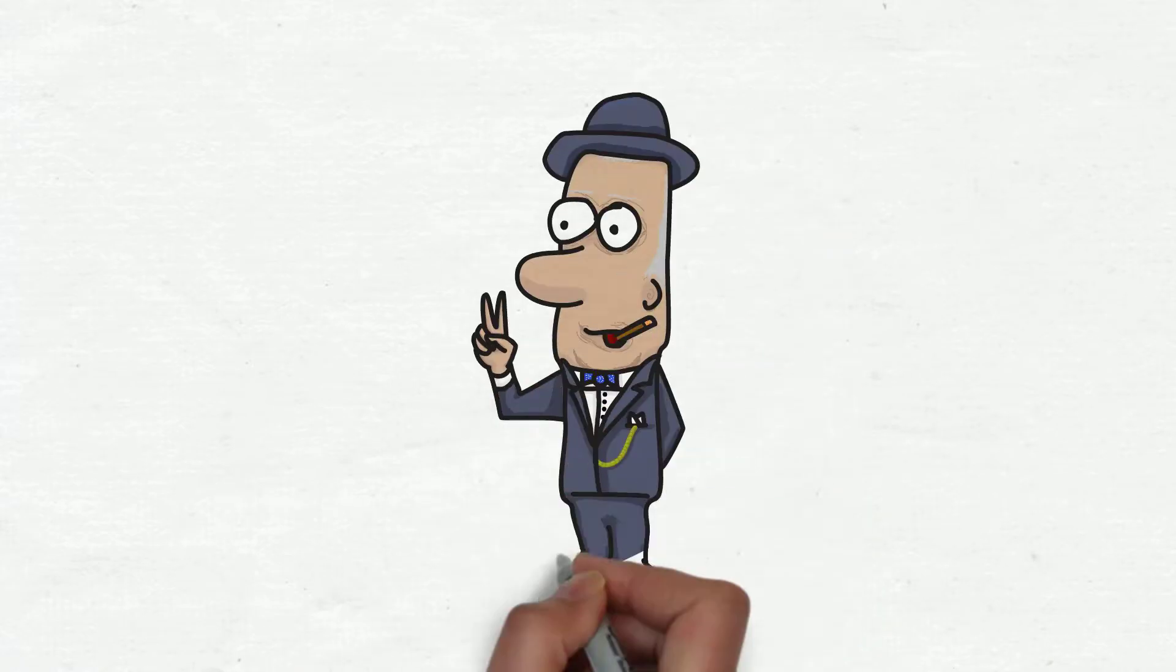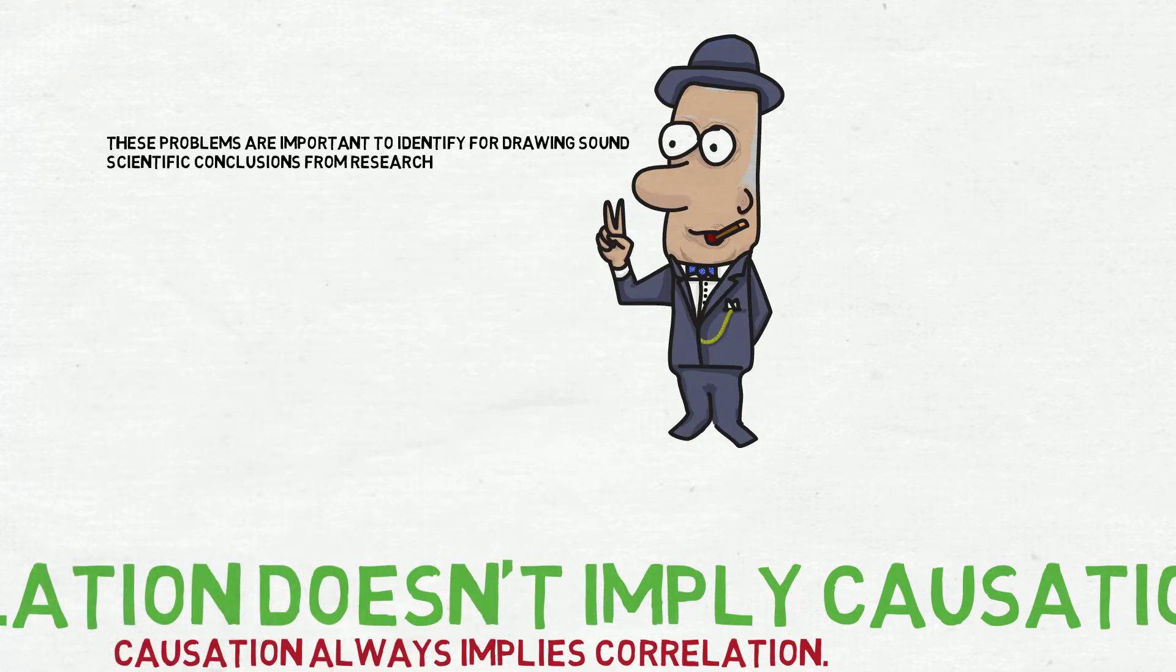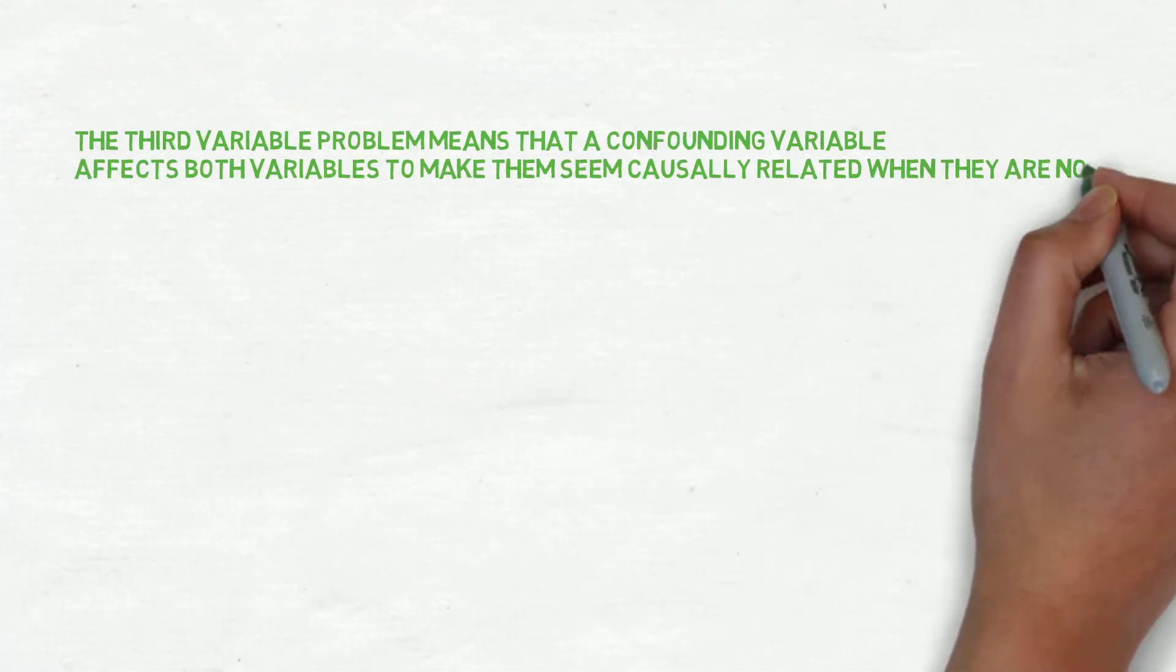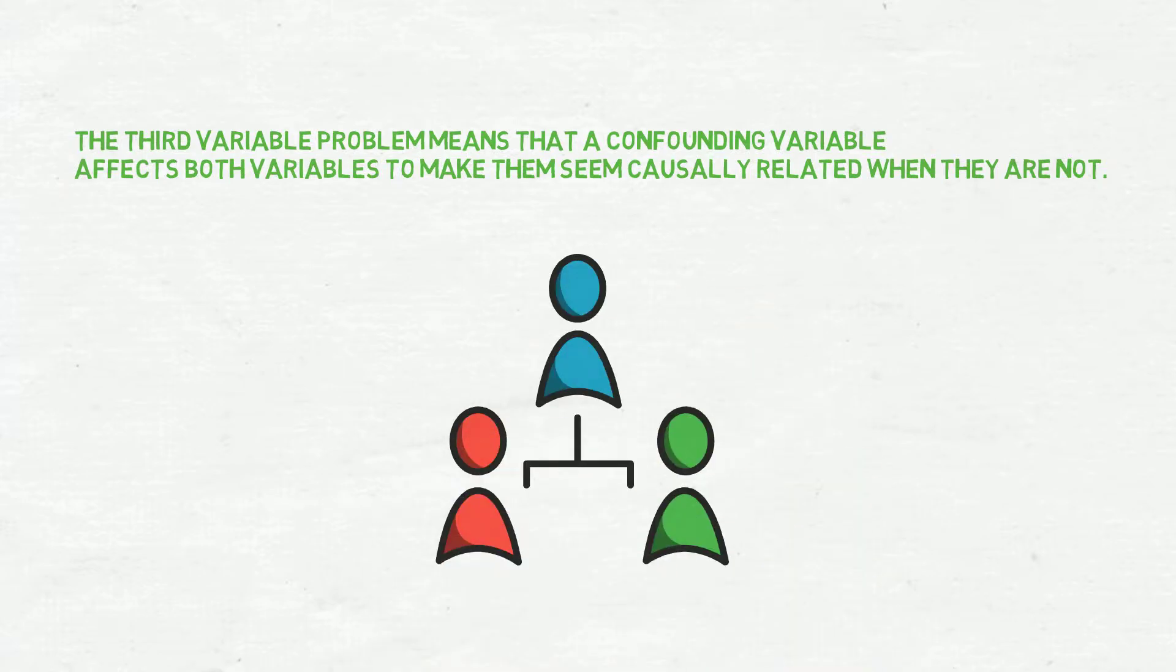There are two reasons why correlation isn't causation. These problems are important to identify for drawing scientific conclusions from research. The first one is the third variable problem. This means that a confounding variable affects both variables to make them seem causally related when they are not.